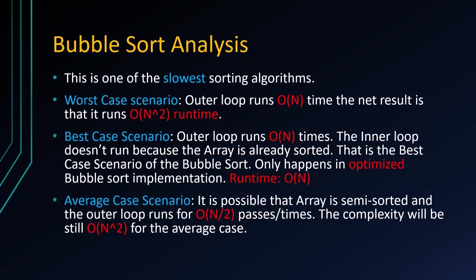Bubble sort analysis. This is one of the slowest sorting algorithms. It has three case scenarios: worst case, best case, and average case. In the worst case scenario, the outer loop runs n times and the net result is it overall runs in O(n²) runtime, which is the slowest sorting algorithm runtime.